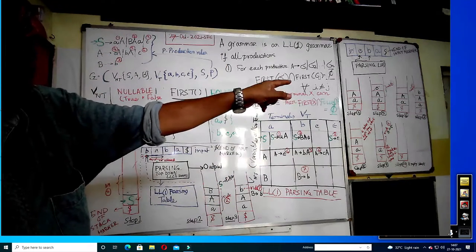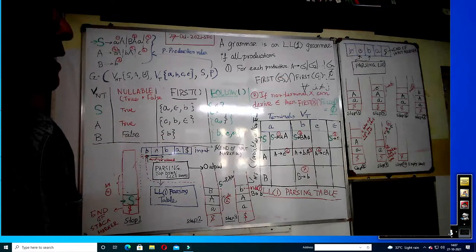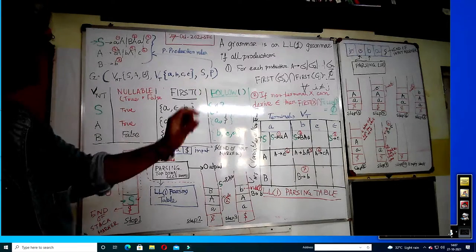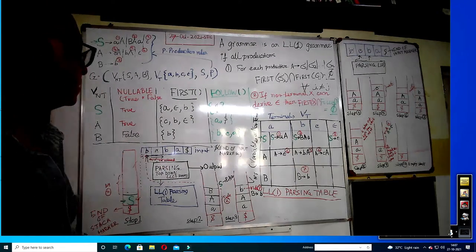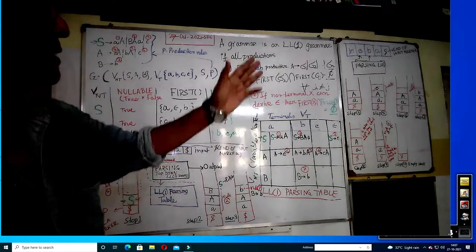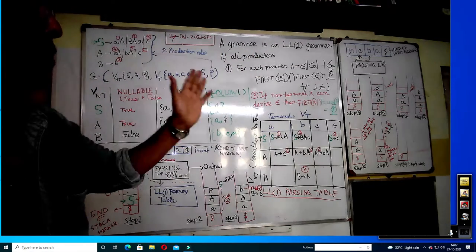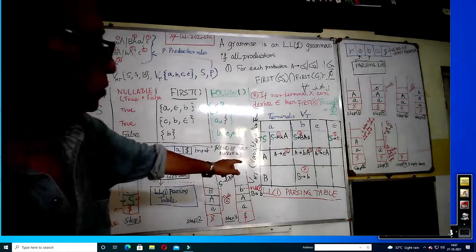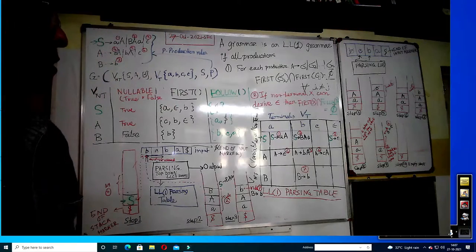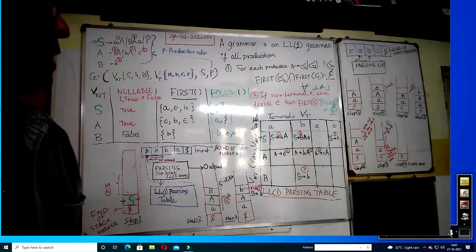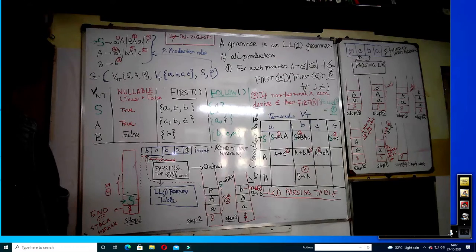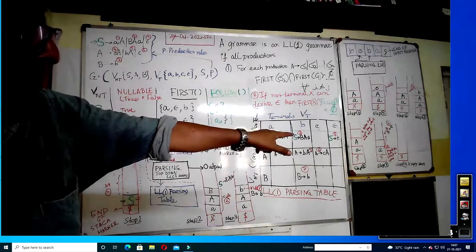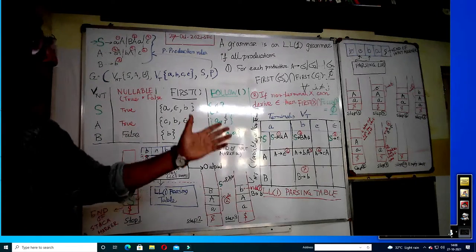Now we have to match A to the current input B, so A to B is rule number 5. B is replaced and A is the right-hand side. In step 7, B in the stack matches the input B, so pointer moves forward to A. A is taken out, and now capital A is at the top. We apply rule A to epsilon (rule number 6). Then small a matches the input small a — both are taken out. Now end-of-stack dollar and input dollar match — that is success.